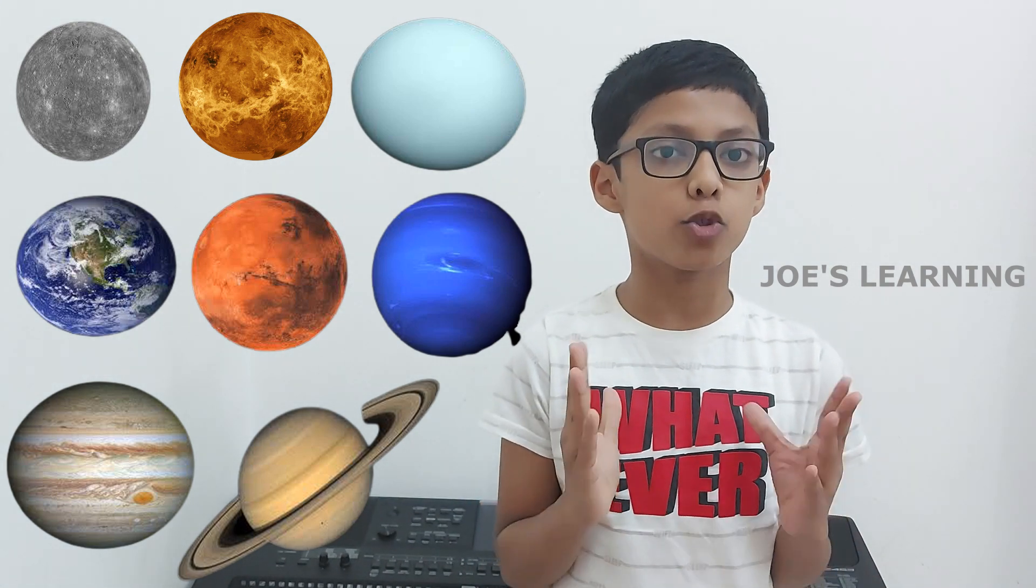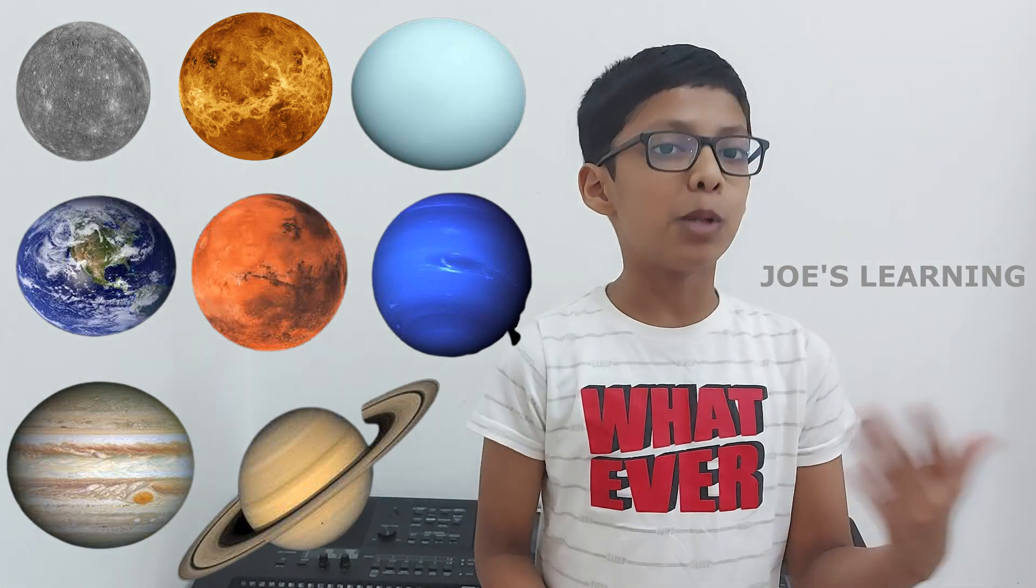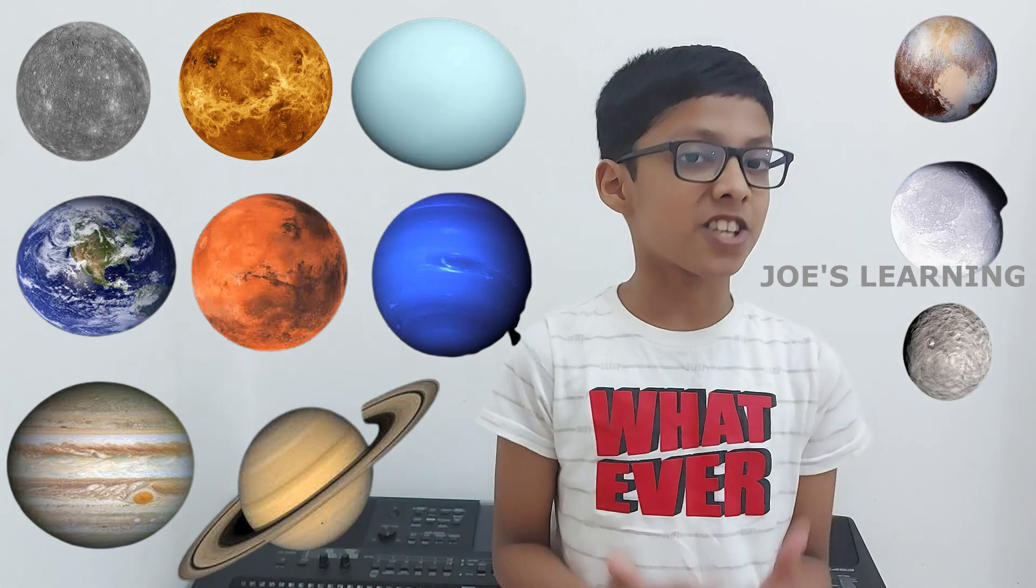And the remaining three planets were named as the Dwarf Planets. And they were named as Pluto, Eris, and Ceres.